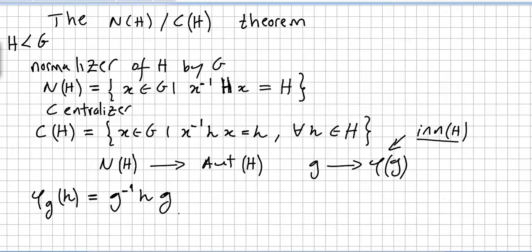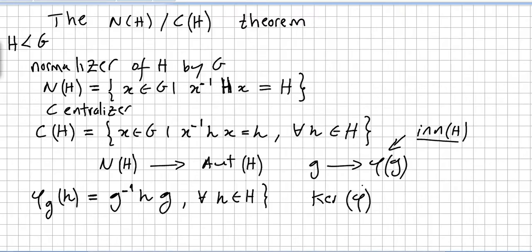So phi_G of h equals G inverse times h times G, for all h in the subgroup H. This mapping is a homomorphism, and its kernel is the centralizer of H.